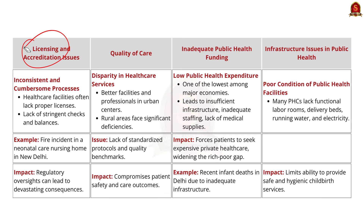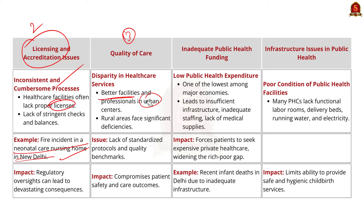The second issue is licensing and accreditation. The process for licensing and accreditation of healthcare facilities is cumbersome and inconsistent across states. Many healthcare providers operate without proper licenses, and there is often a lack of stringent checks and balances — as highlighted by the recent fire in a neonatal care nursing home in New Delhi. The third issue is quality of care. There is a significant disparity in healthcare quality across the country, with urban centers having better facilities and more qualified professionals compared to rural areas.